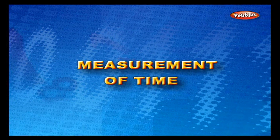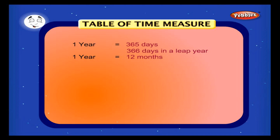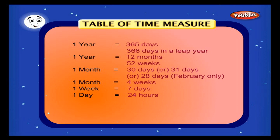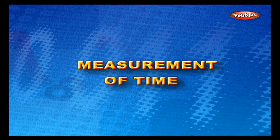Measurement of time. Table of time measure: we have 365 days in a year, but once in four years we have 366 days, and that year is called the leap year. In one year we have 12 months and 52 weeks. In one month we have 30 days in some months, 31 days in some months, and 28 days for February. In one month we have four weeks, in one week we have seven days, in one day we have 24 hours, in one hour we have 60 minutes, in one minute we have 60 seconds.